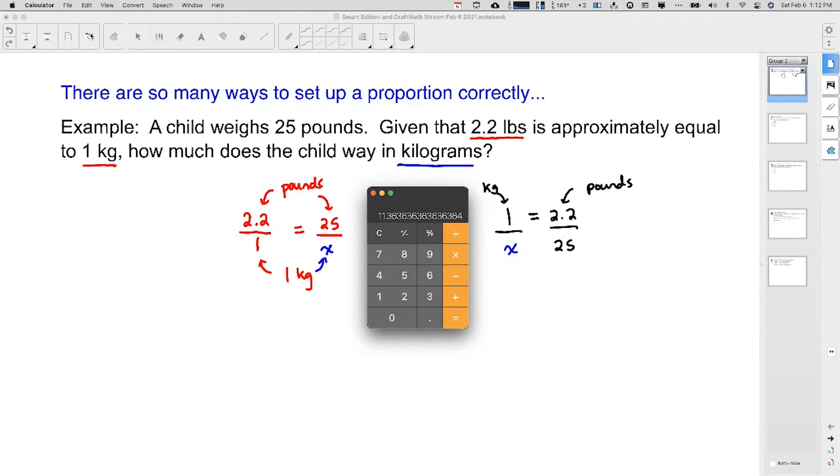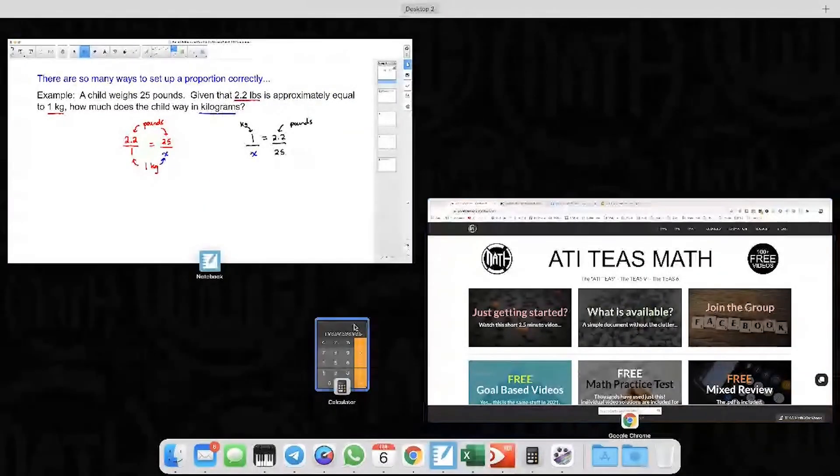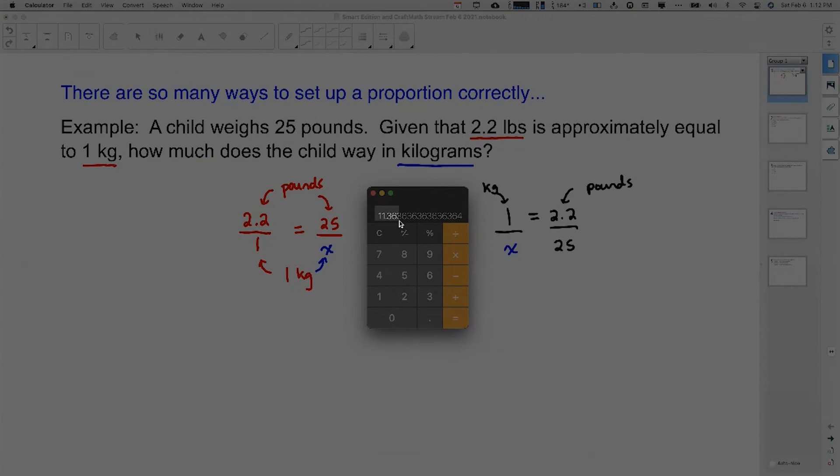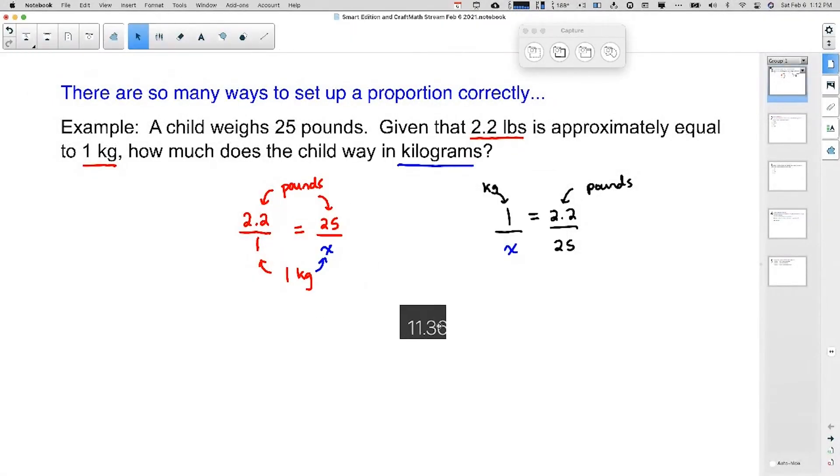And obviously on the TEAS, you will want to round that. Let me get my calculator back up. So somewhere around 11.4 kilograms, give or take, depending on what it tells you to round to.